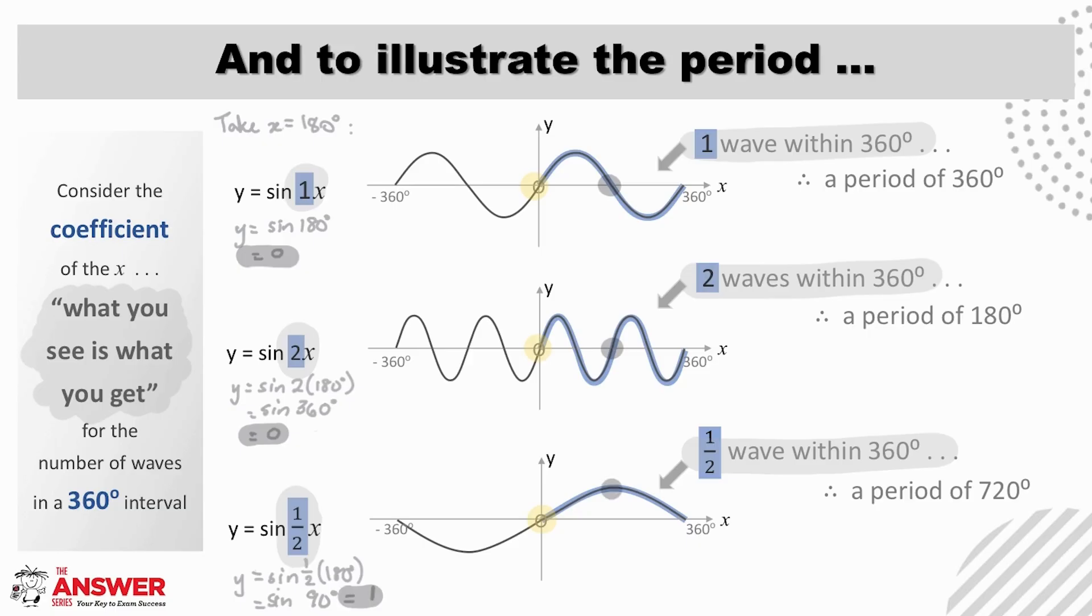Hopefully now you are convinced that these graphs are a true reflection of their equations, so now let's confirm their periods, which we looked at algebraically before. When we have one wave in this 360 degree interval, the period of the graph is 360 degrees. When we have two waves in this interval, the period of the graph is 180 degrees, and when we have half a wave in this interval, the period of the graph is 720 degrees.